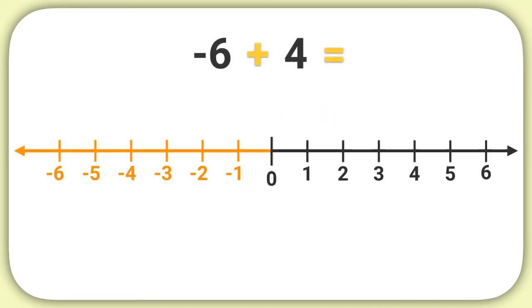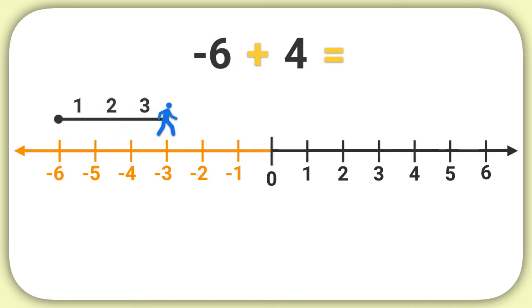Here's another problem to practice with. Let's add negative 6 plus 4. I'm going to start at negative 6 on my number line. I'm adding positive 4, so I'm adding a positive number. My person is going to walk forwards. If I walk forwards 4 spaces: 1 space, 2 spaces, 3, and 4, I'm at negative 2.